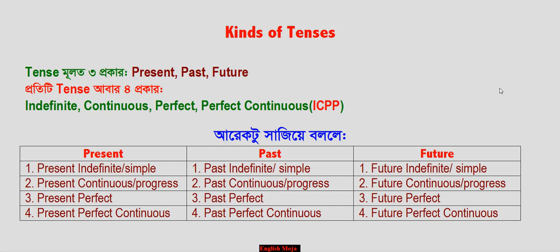Kinds of Tenses. First, what is Tense? Tense is of 3 kinds. In the next class, I will repeat all 3.